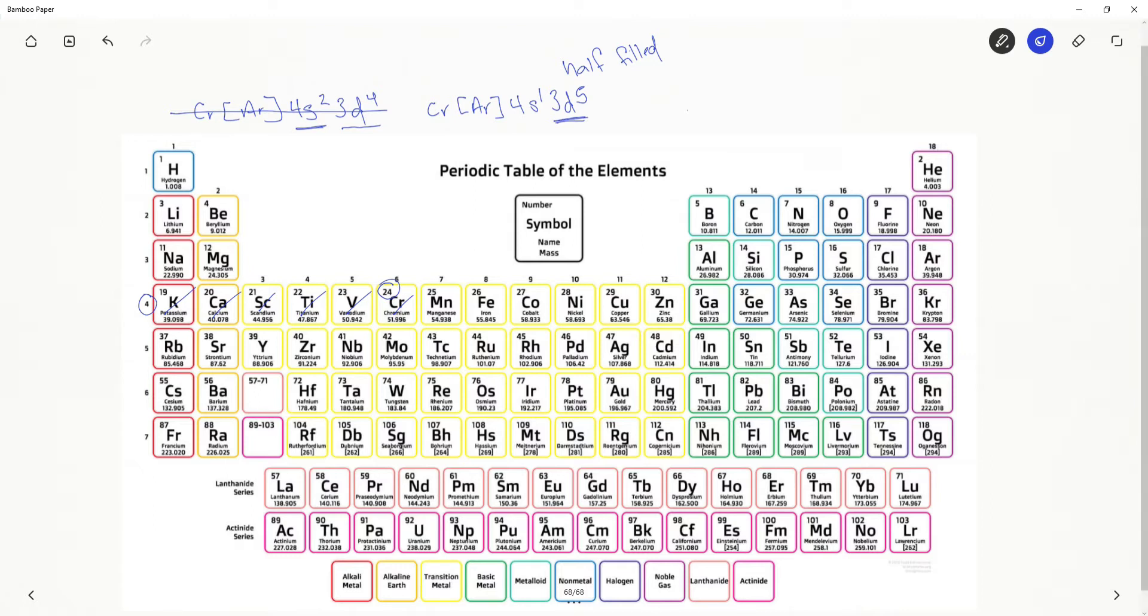Now, what does this do to the 4s? Notice it also becomes a half-filled orbital. So atoms are really looking for the lowest energy state. And therefore, it seems like they're breaking the rules, but they're really not breaking the rules. They are following the lowest energy state.